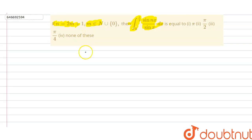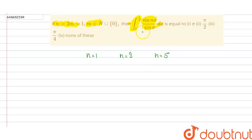What we are going to do is start this question. We know that when we put m equal to 0, we get n equal to 1. When we put m equal to 1, we get n equal to 3, and similarly n equal to 5, and so on — since n = 2m+1 gives odd numbers. Now we have to find the value of the integral from 0 to π/2 of sin(nx)/sin(x) dx.